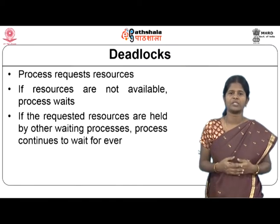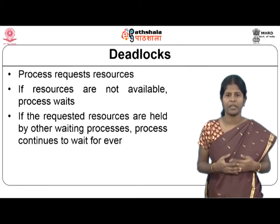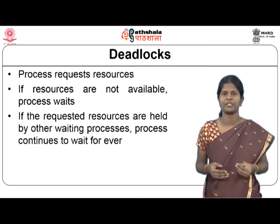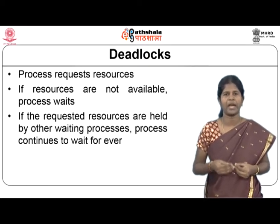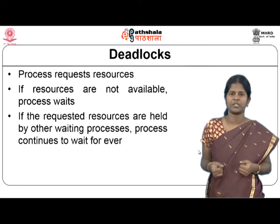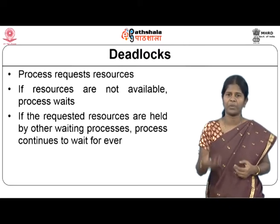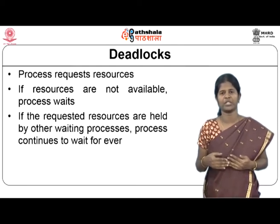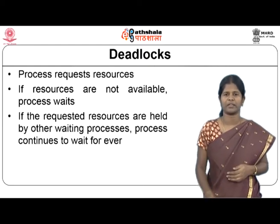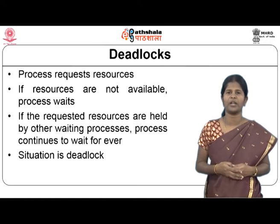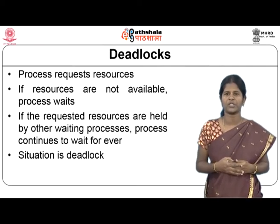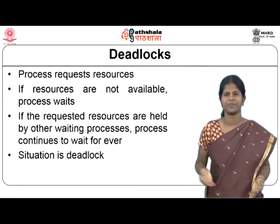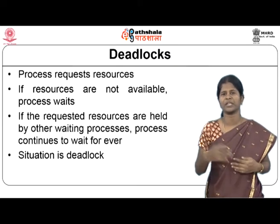If the resources are held by other waiting processes, then the process will continue to wait forever. For example, a process that needs the printer cannot get it because another process is holding the printer and waiting for a resource held by the first process. Both processes wait for each other indefinitely. This situation — where all processes in a set are waiting for resources held by other processes in the same set — is called a deadlock.